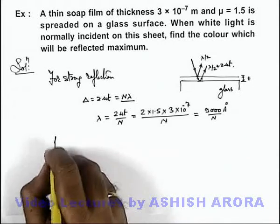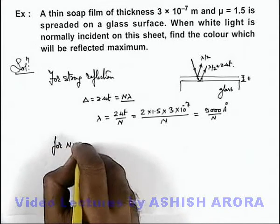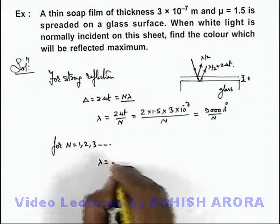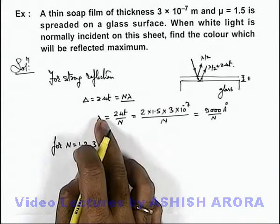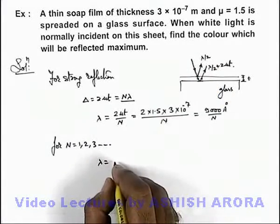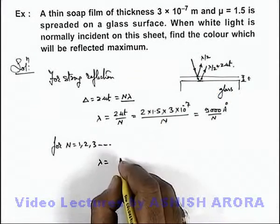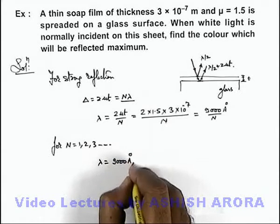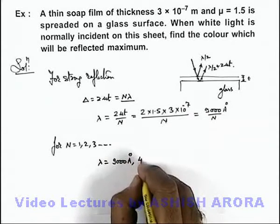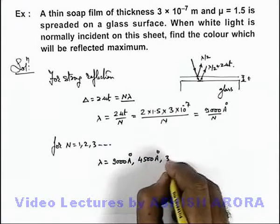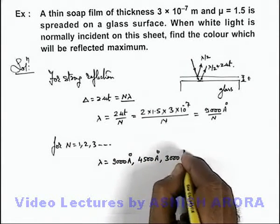And here for n = 1, 2, 3, and so on, if we calculate the wavelengths producing constructive interference in the reflected light: for n = 1, this will be 9000 angstrom; for n = 2, it is 4500 angstrom, and so on.